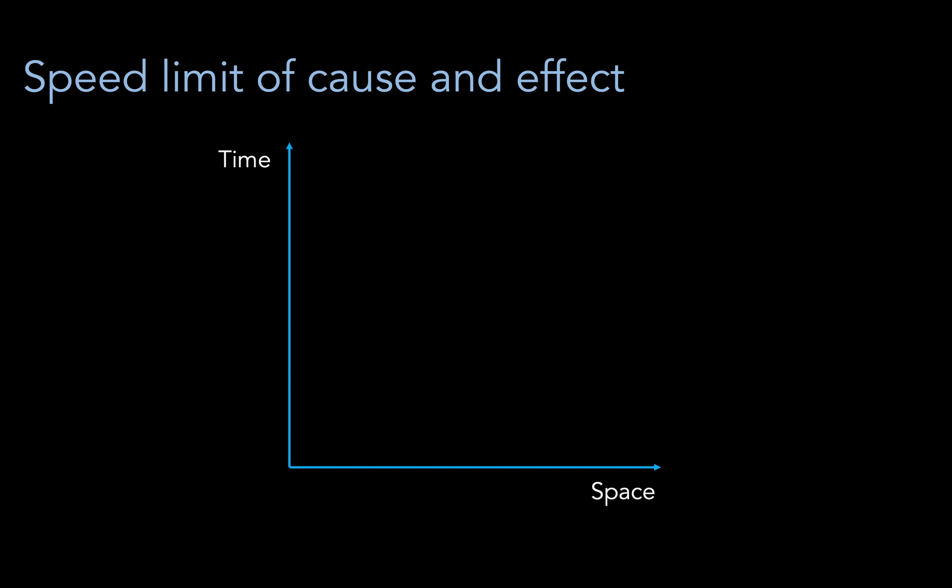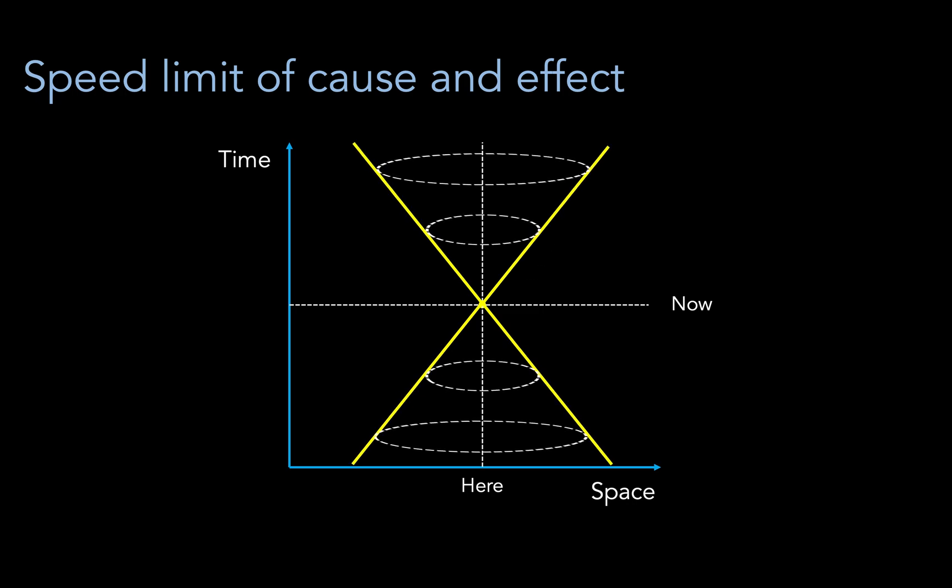Let's say we have an event at some particular time and place. We can imagine a cone stretching into the future and the past where the radius expands at the speed of light into the past and the future.